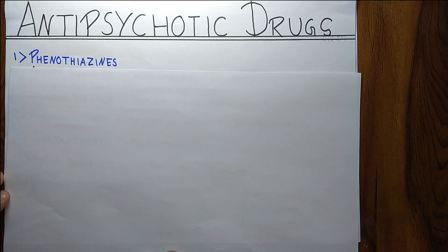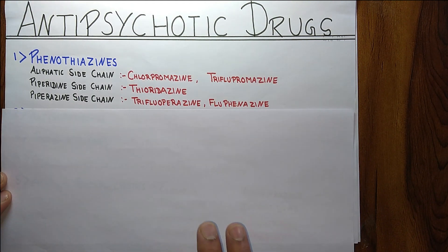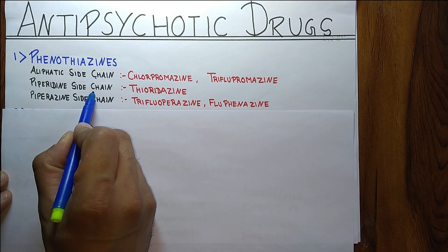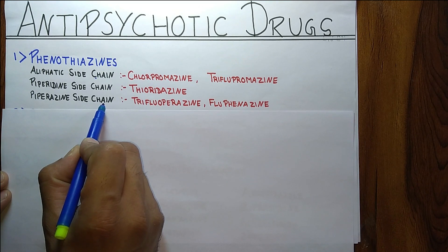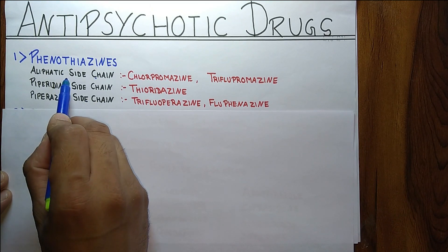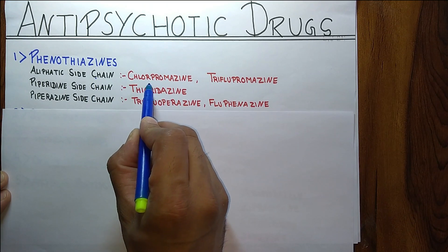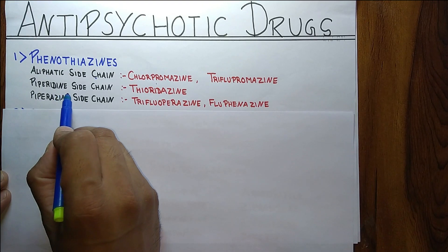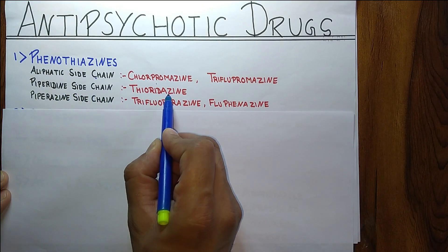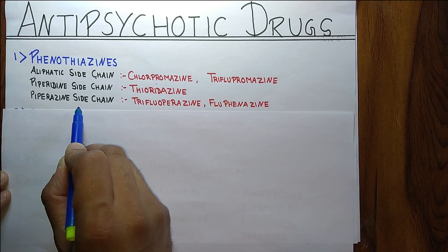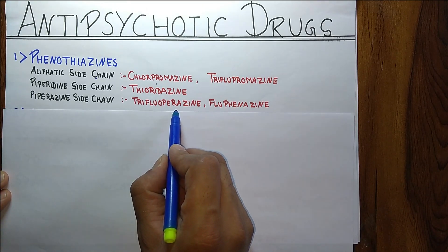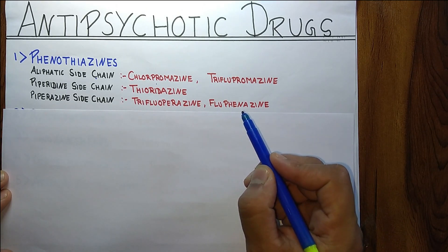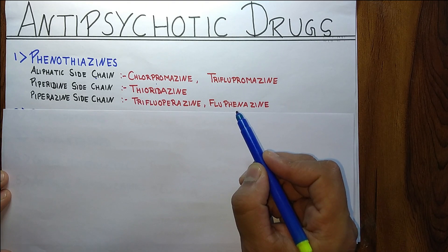The first class is Phenothiazine. There are three subclasses: first one is Aliphatic sidechain, second one is Piperidine sidechain, and third one is Piperazine sidechain. In Aliphatic sidechain there are two drugs — Chlorpromazine and Triflupromazine. In Piperidine sidechain there is Thioridazine, and in Piperazine sidechain there is Trifluoperazine and Fluphenazine.